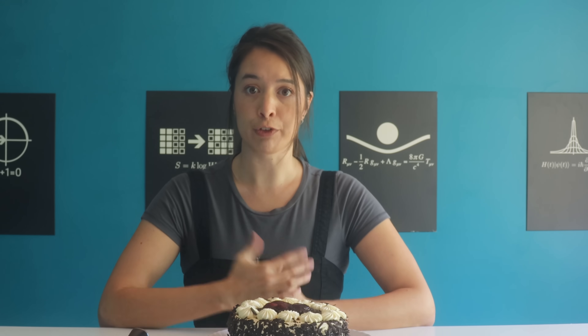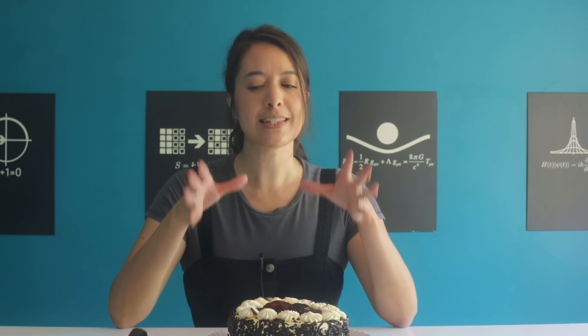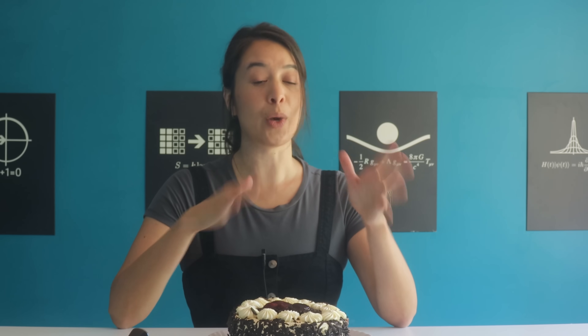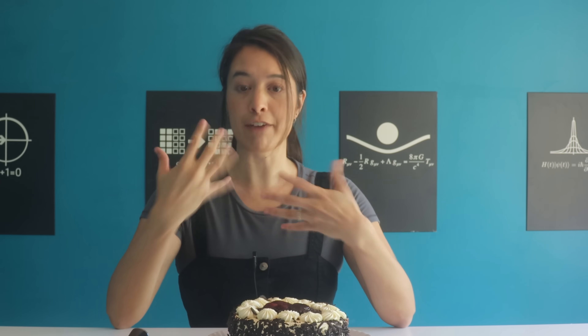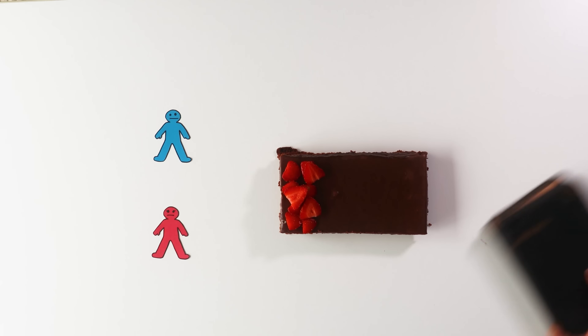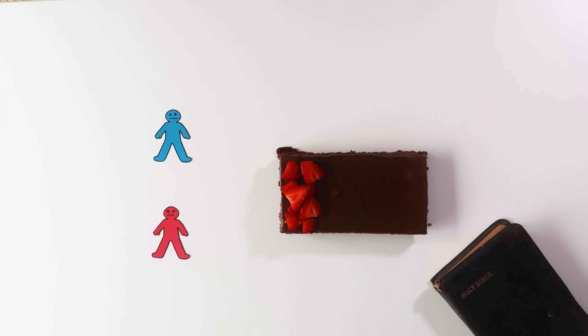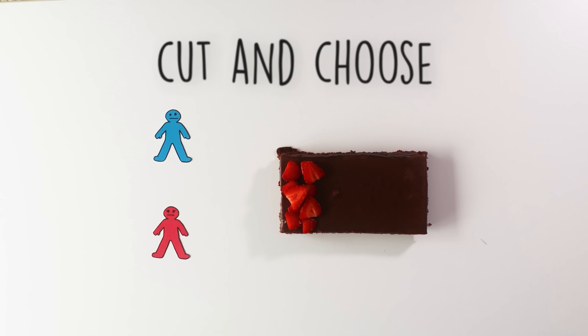To see why, let's get familiar with what a mathematical algorithm for fairness even looks like. We want a step-by-step procedure that, when we get to the end, everybody has a piece of cake they consider fair. For two people, there's an algorithm as old as time — it was even mentioned in the Bible. It's called cut and choose.